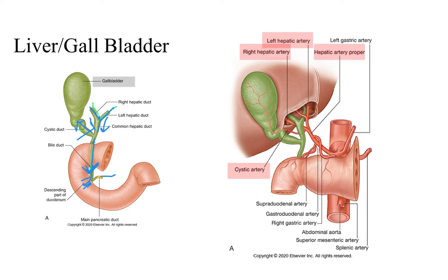As far as the blood supply goes, you have the celiac trunk which branches off into the common hepatic artery. Following that up, where it branches off into the right hepatic artery, there's a small branch that comes off — that's your cystic artery. The cystic artery supplies blood to the gallbladder. Cystic means bag or bladder, so the cystic artery is the artery supplying the gallbladder.